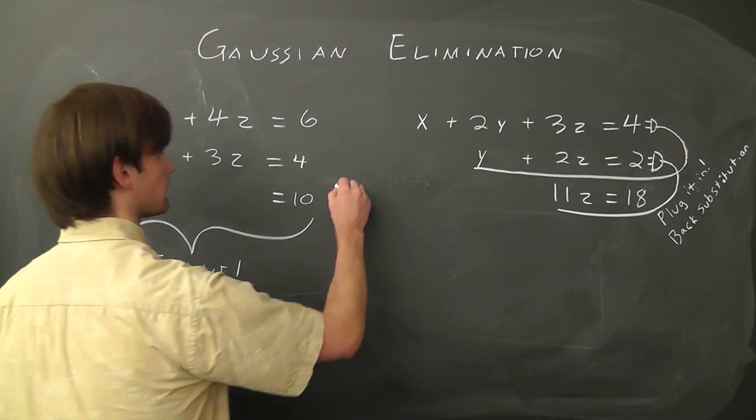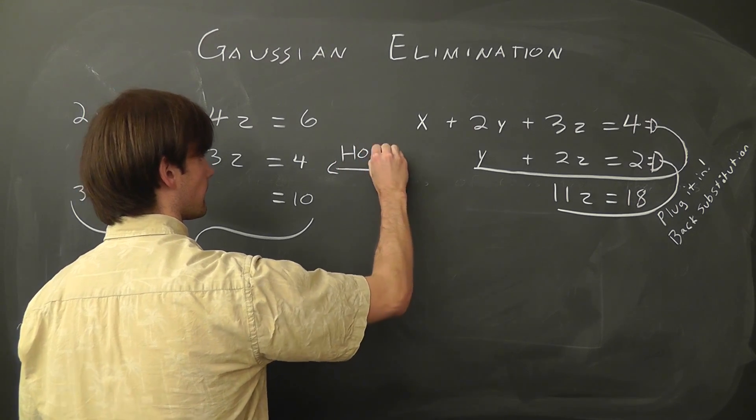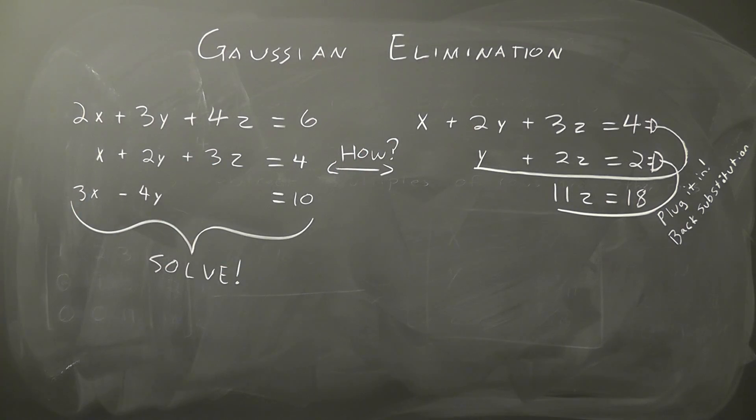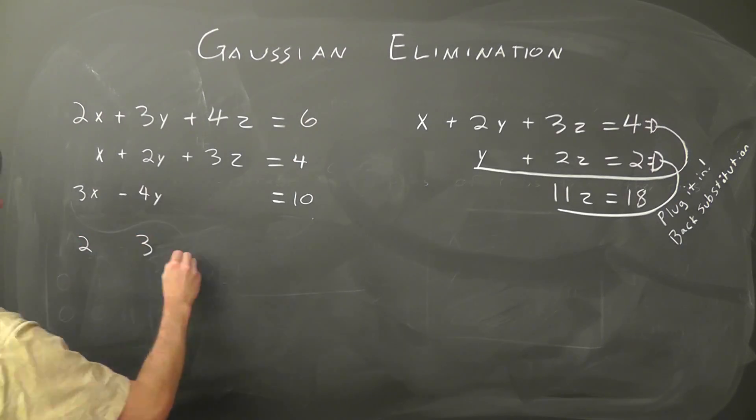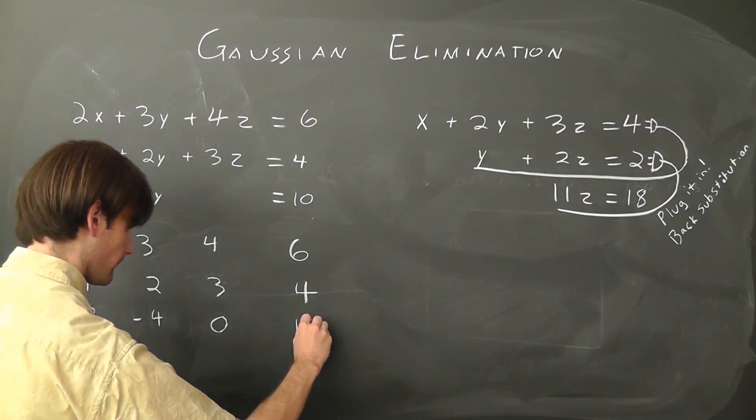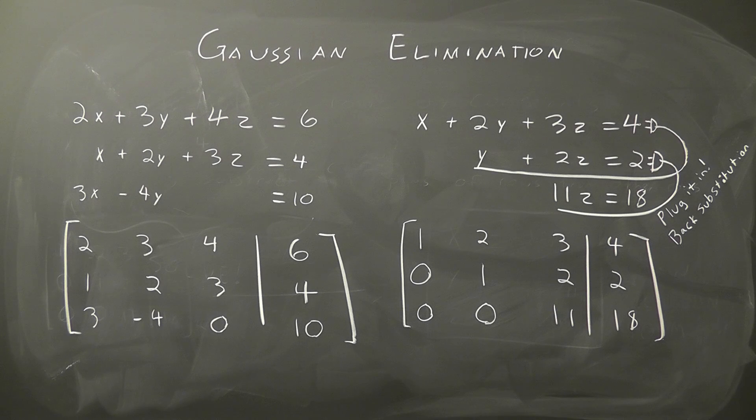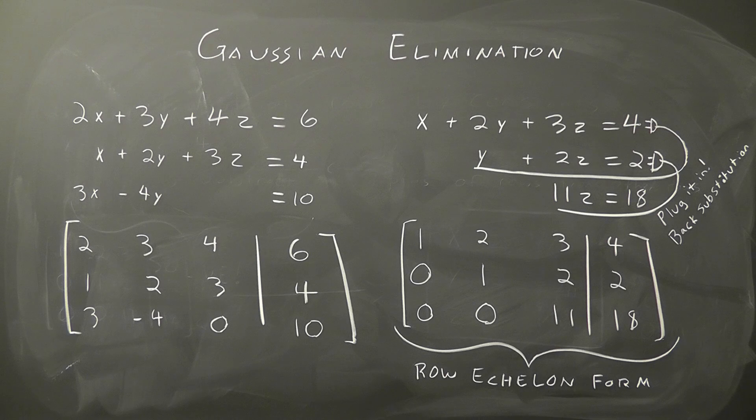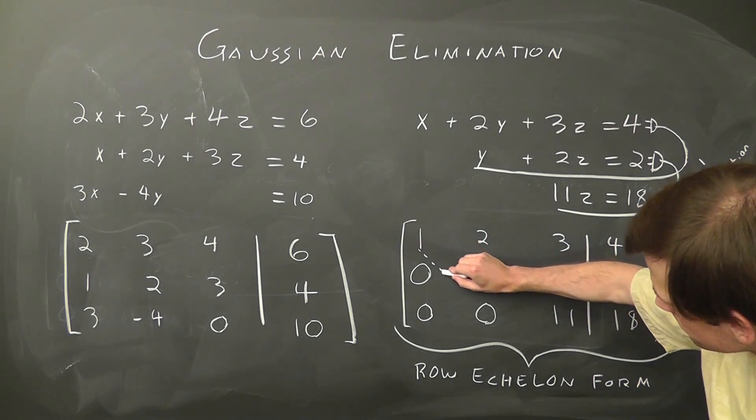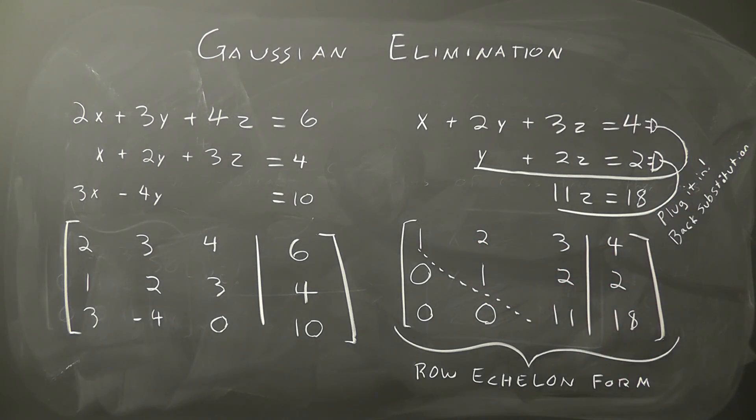Gaussian elimination is the process that allows us to transform one set of equations into another set of equations that is much easier to solve. To do this, we simply take our set of equations and represent it as some sort of matrix. In matrix form, these systems look like this, and the one on the right has a special name, row echelon form, which basically means all non-zero elements are above the diagonal, creating what looks like an upper triangular matrix.